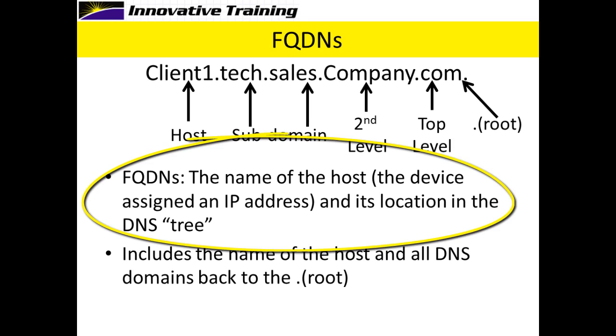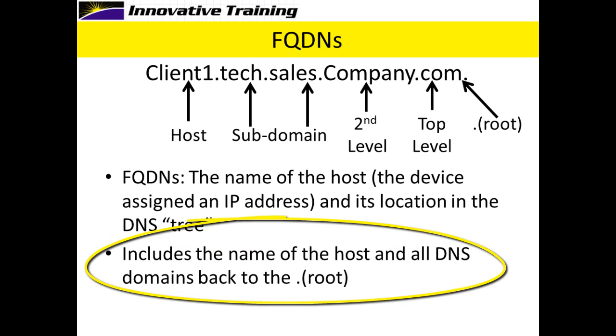In an FQDN, you have the name of the host, which is the device that's actually assigned an IP address, and its location in the DNS tree. So the FQDN is the name of the host and all the DNS domains back to the root.